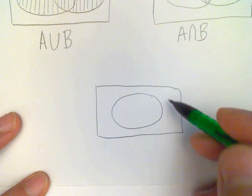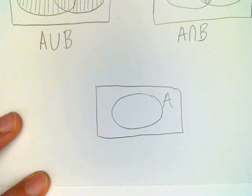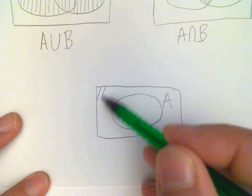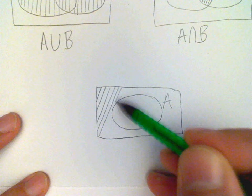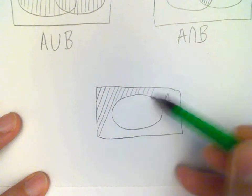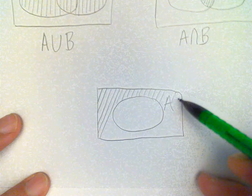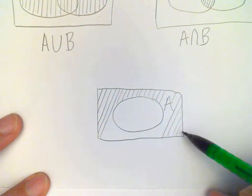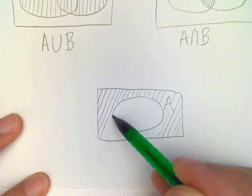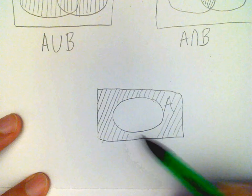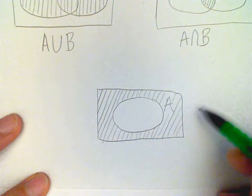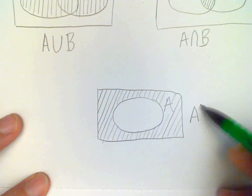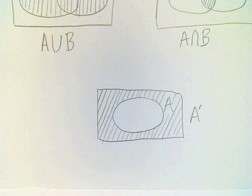Okay, so we only have our set A here. And now to indicate the complement of A, I need to shade within the rectangle but outside of my oval. And there's my Venn diagram for the complement of A.